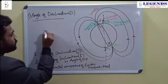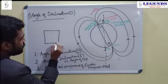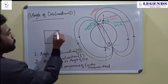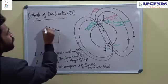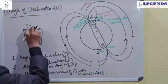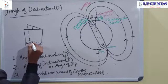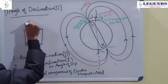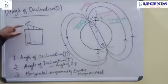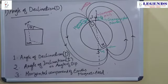You can draw this in the plane: this is the geographic meridian, and this is the magnetic meridian. The angle between the geographic meridian and the magnetic meridian is the angle of declination.